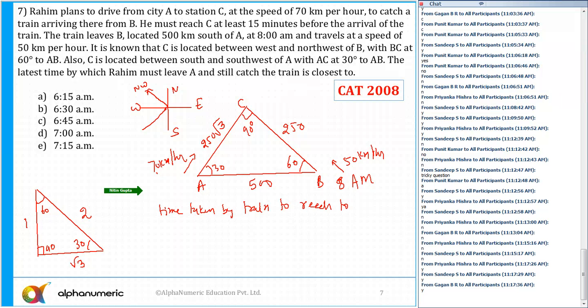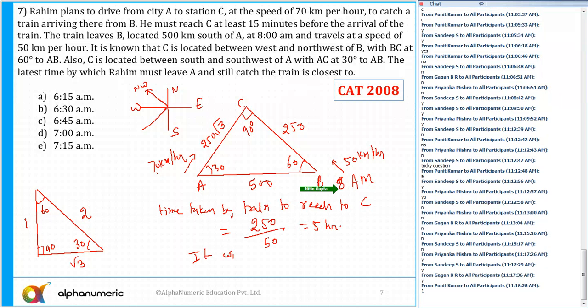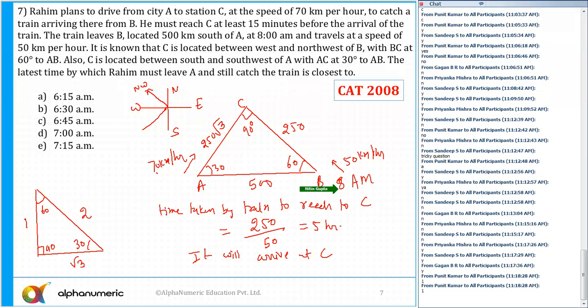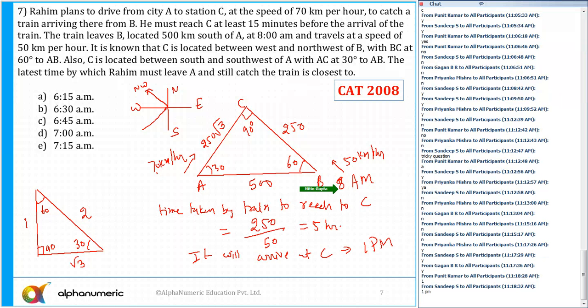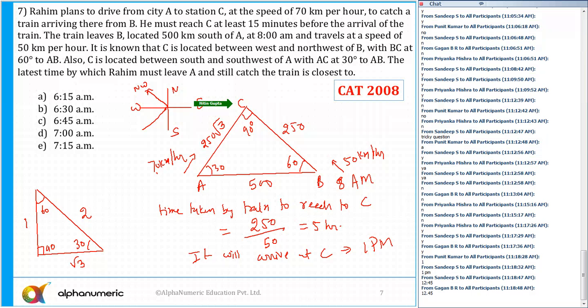The time taken by the train to reach C is distance BC, which is 250, divided by speed 50, so 250/50 equals 5 hours. Since it is leaving station B at 8 AM, it will arrive at station C at 1 PM. Rahim should reach C at 12:45, which is 15 minutes before.